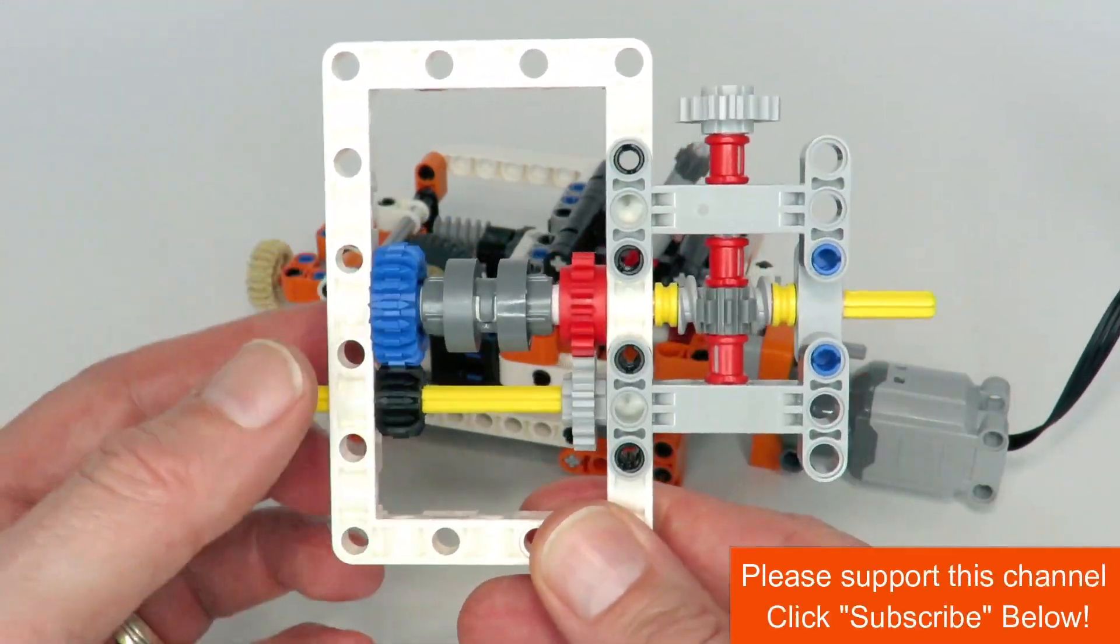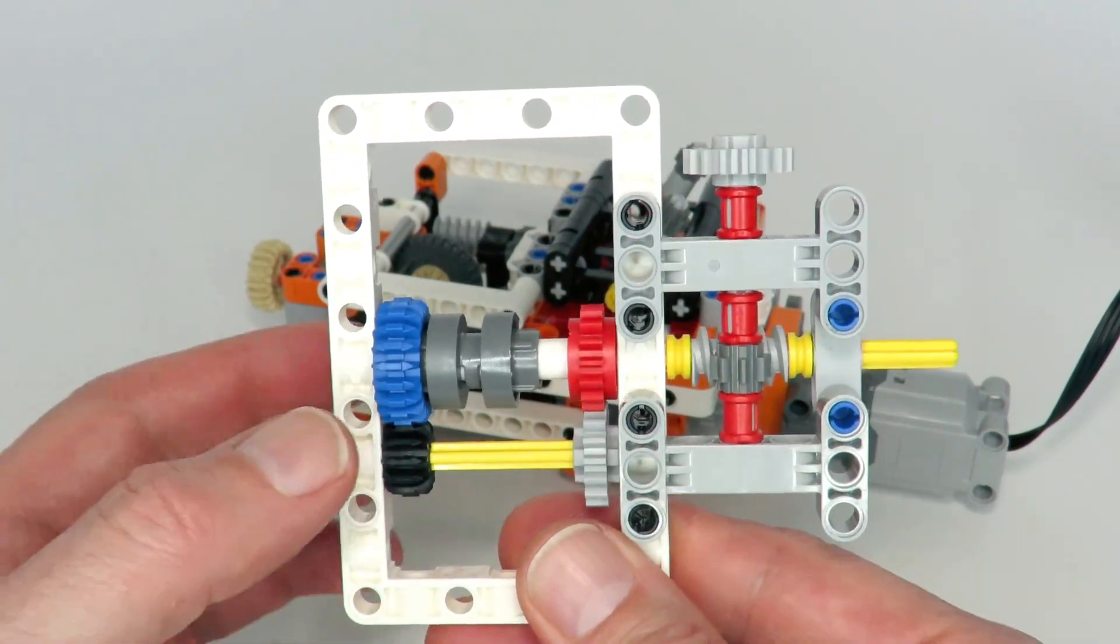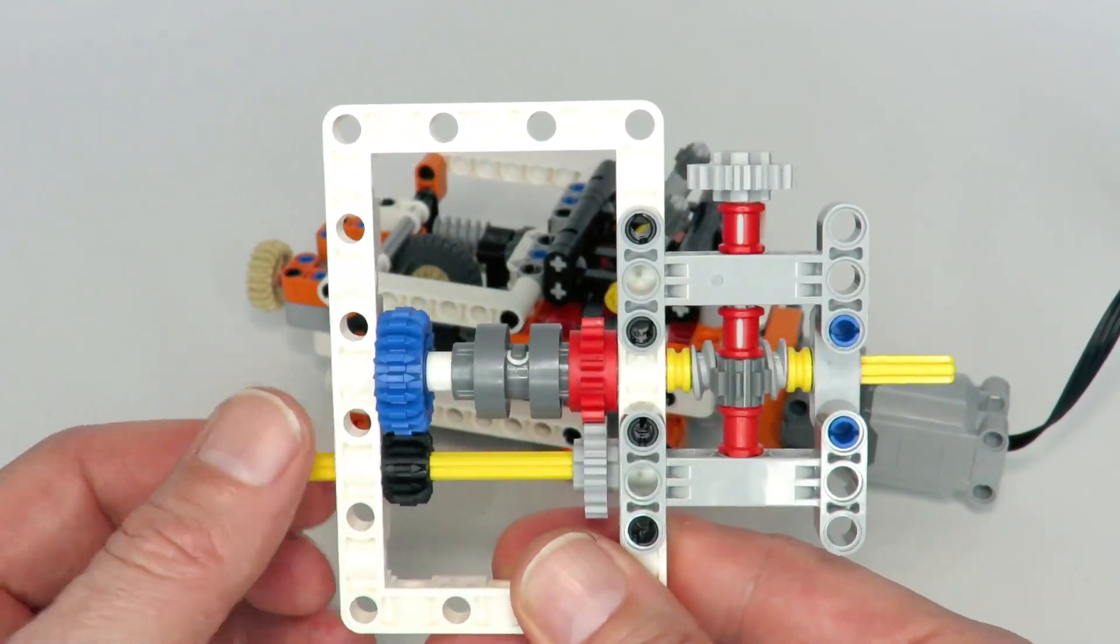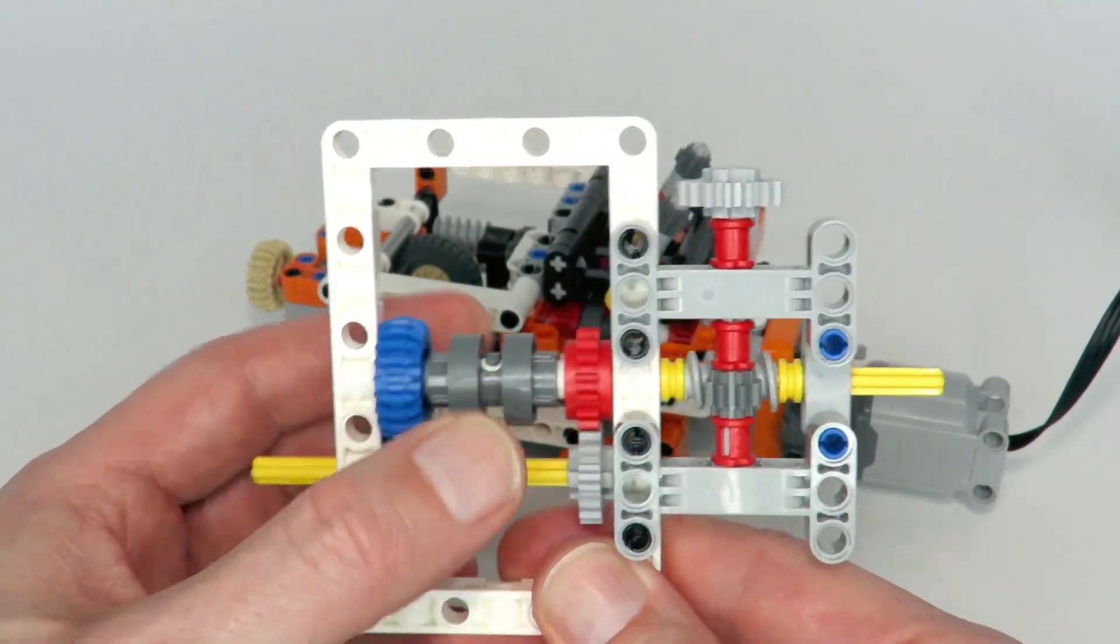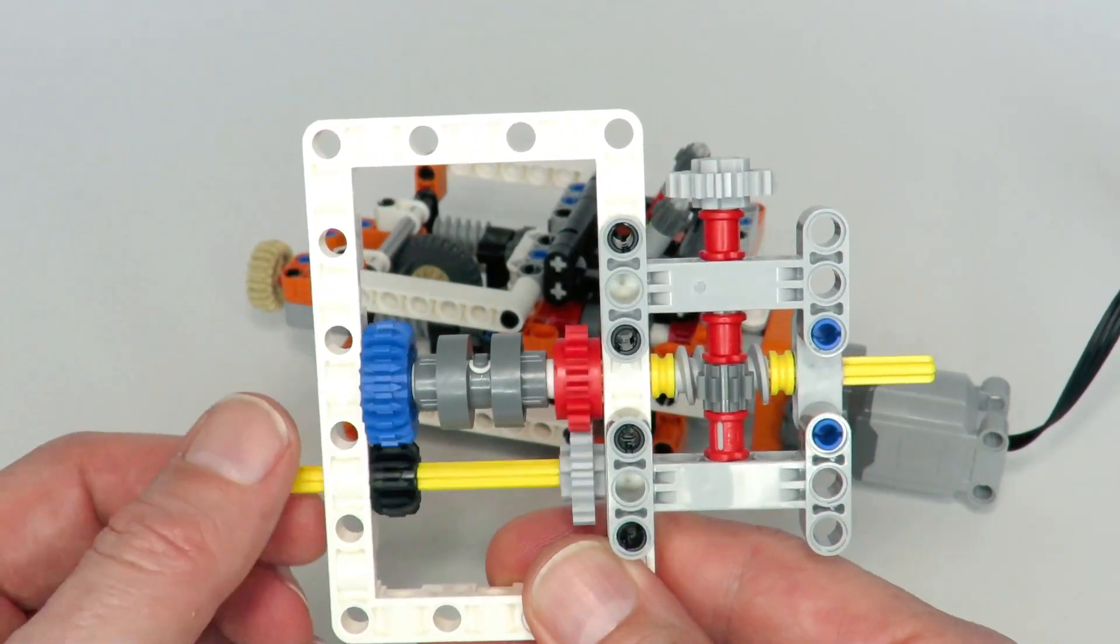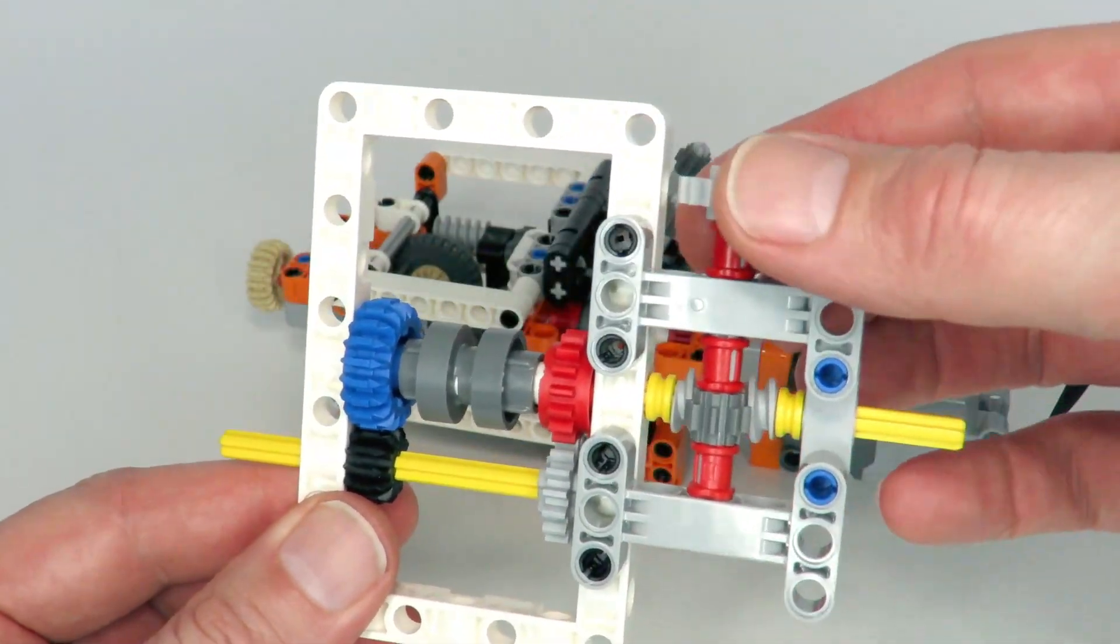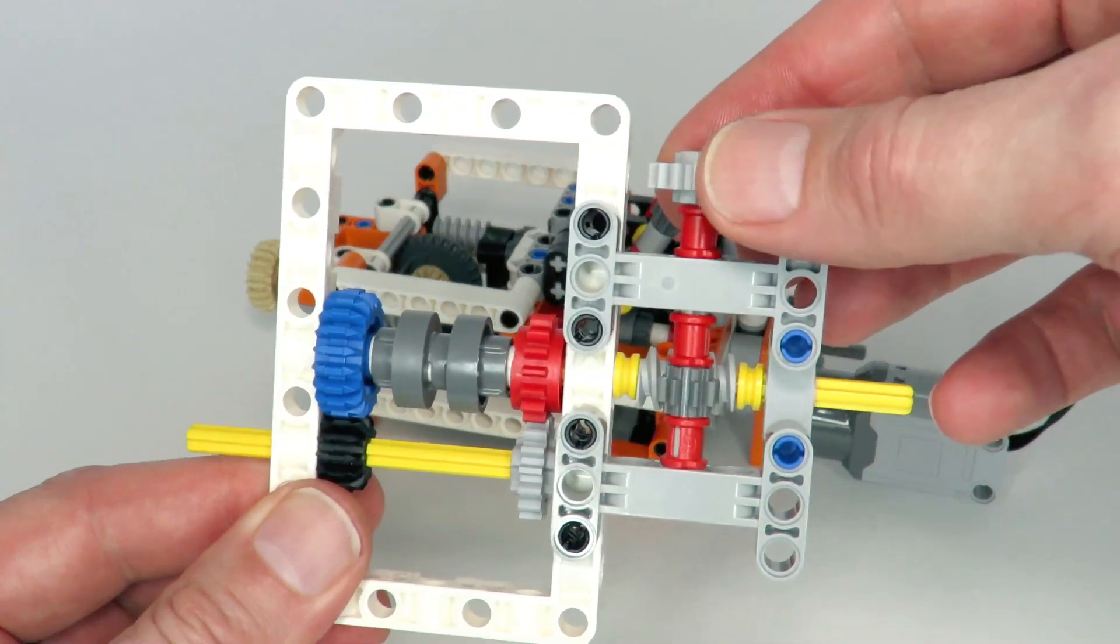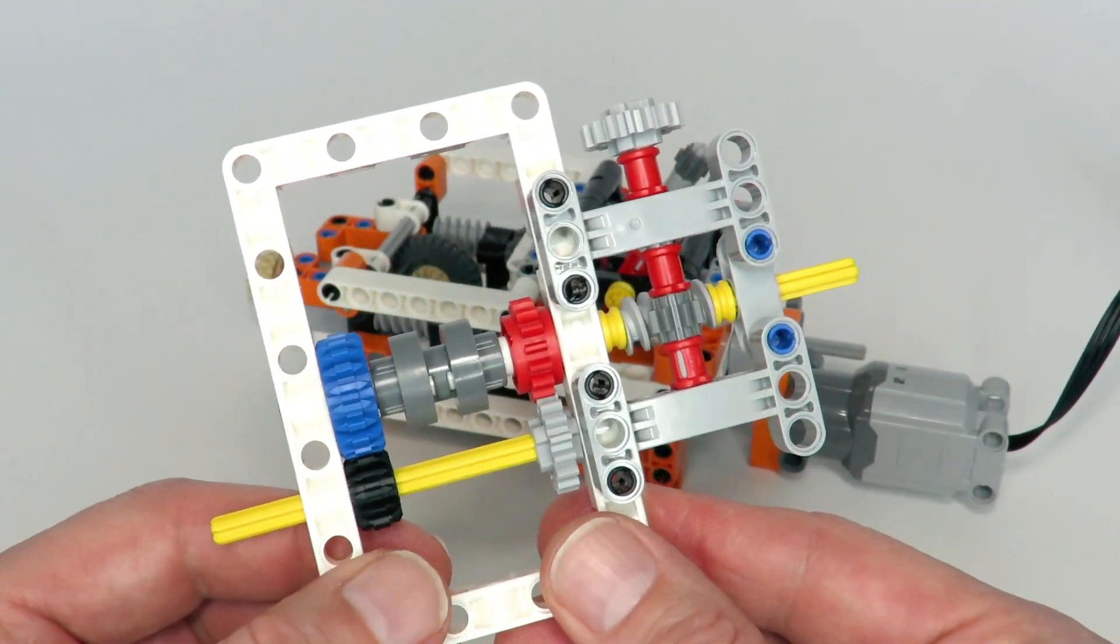And by selecting, for example, speed one, we've got speed one at the output. We can select speed two and that gives us a different speed through the different gearing ratio. Then in the middle, in fact, we've got the third speed, which is just simply speed zero, and the structure of the worm gear prevents that from being rotated backwards.